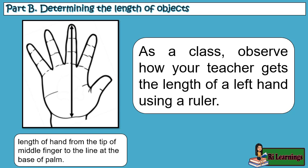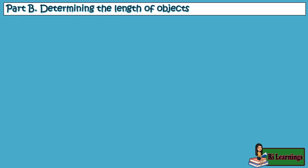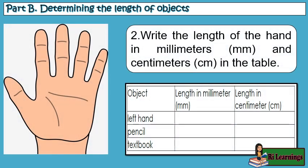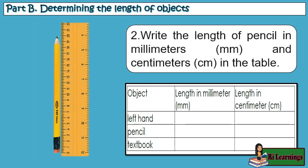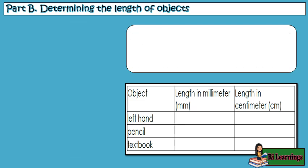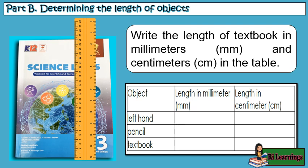We used these in measuring the lengths of objects in our previous lessons. 1. As a class, observe how your teacher gets the length of a left hand using a ruler. 2. Write the length of the hand in millimeters in the table. 3. Write the length of pencil in millimeters and centimeters in the table. 4. Write the length of textbook in millimeters and centimeters in the table.